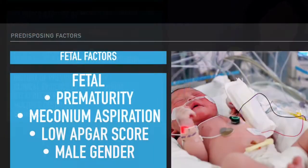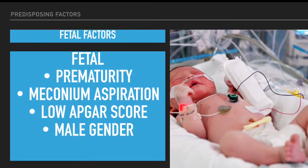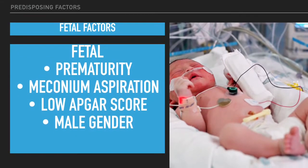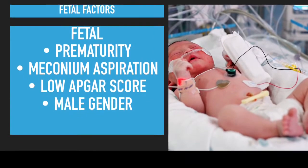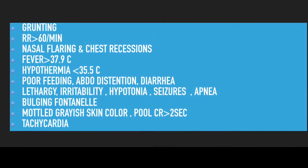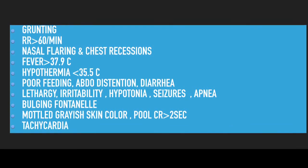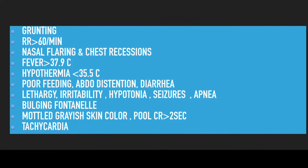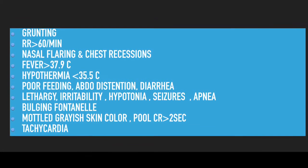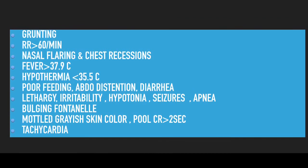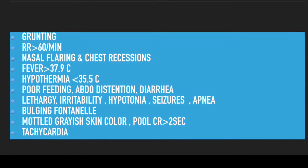For fetal factors, these are also straightforward: fetal prematurity, meconium aspiration, low APGAR score, as well as male gender. For signs and symptoms, the neonate will have signs like grunting, an increased respiratory rate of more than 60 breaths per minute, nasal flaring, and chest recessions — these are signs of respiratory distress to look out for.